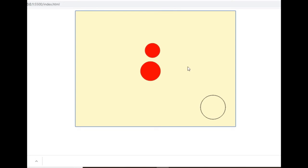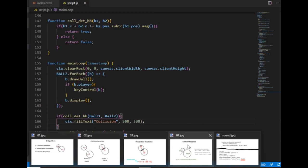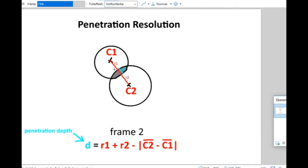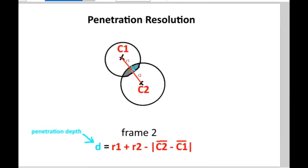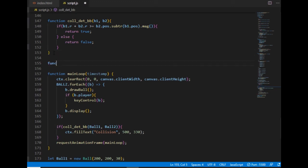Instead of displaying a message, I would like to do the penetration resolution. Going back to the picture: to solve the penetration issue I will reposition the two balls so that they stop overlapping. I will use a vector that points from one center point to the other and move the balls along that line, moving both of them by the same amount — half of the penetration depth. I will move one ball by half the penetration depth in one direction and the other by half in the opposite direction.